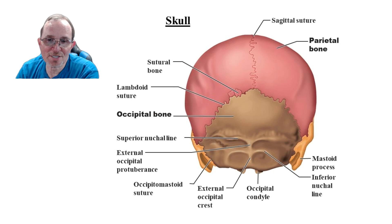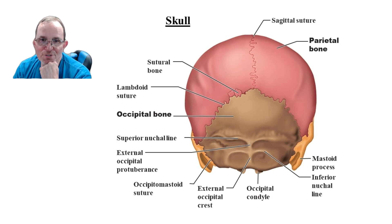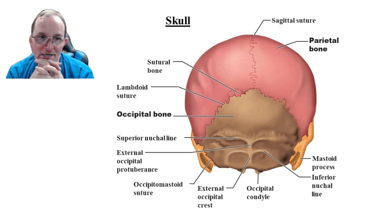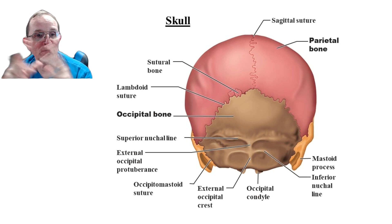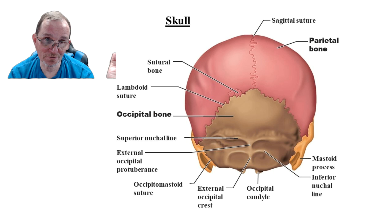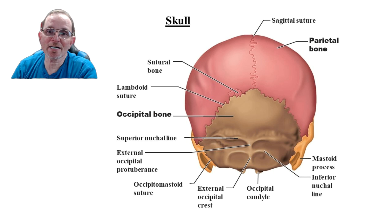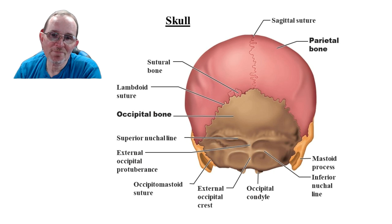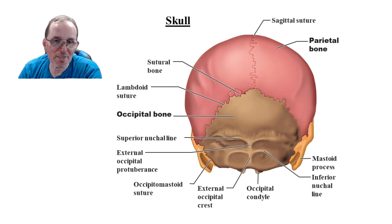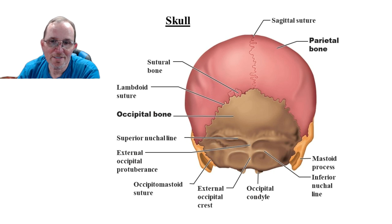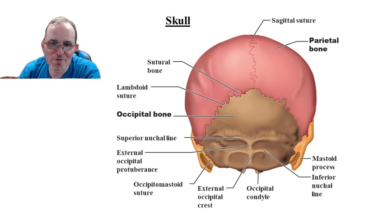From the back, you can see the occipital bone and these sutures. When we're born, not all the skull bones are connected yet — we want our head to be flexible so we can make it through the birth canal. There's the sagittal suture and the lambdoid suture, and there are even some small bones called sutural bones embedded in there. The occipital bone has ridges called the superior and inferior nuchal lines running horizontally, and the external occipital protuberance running vertically.